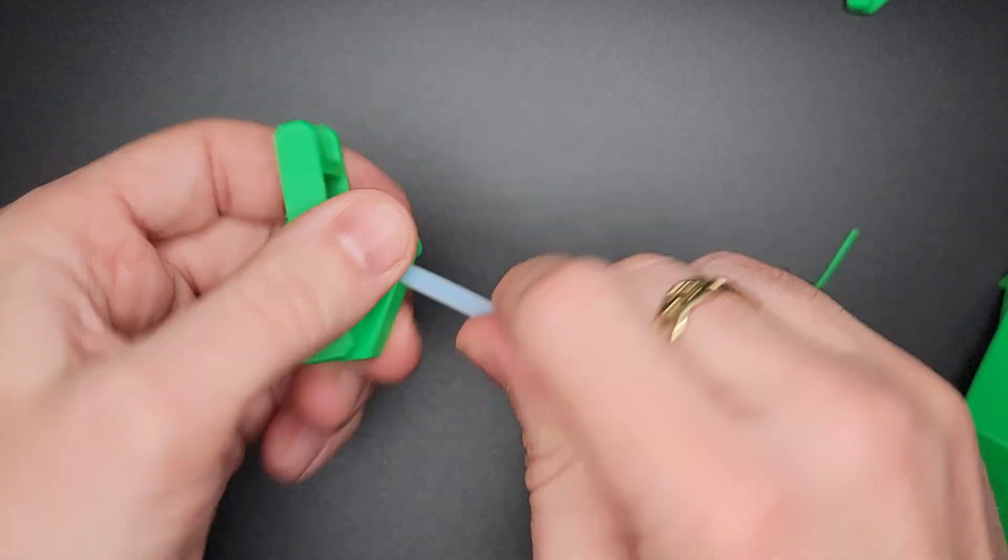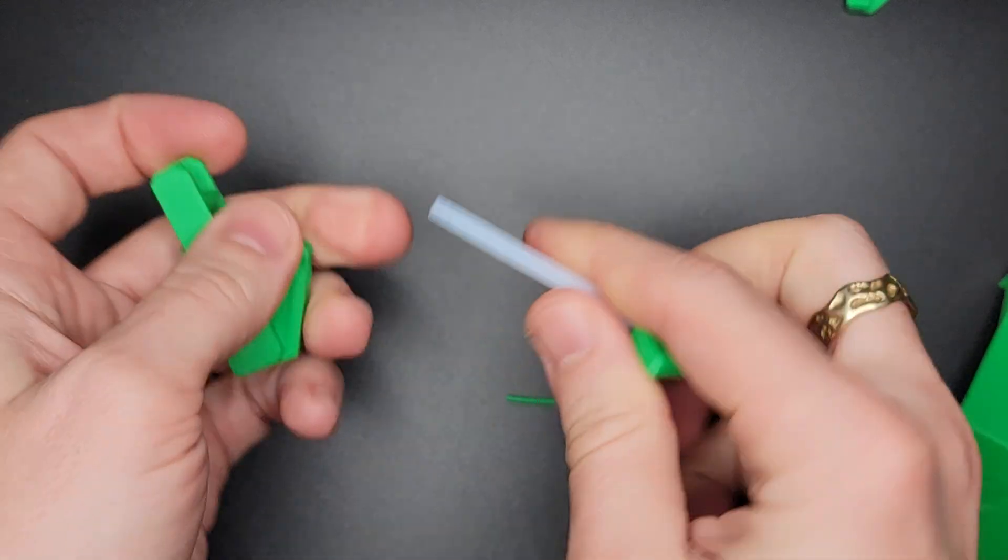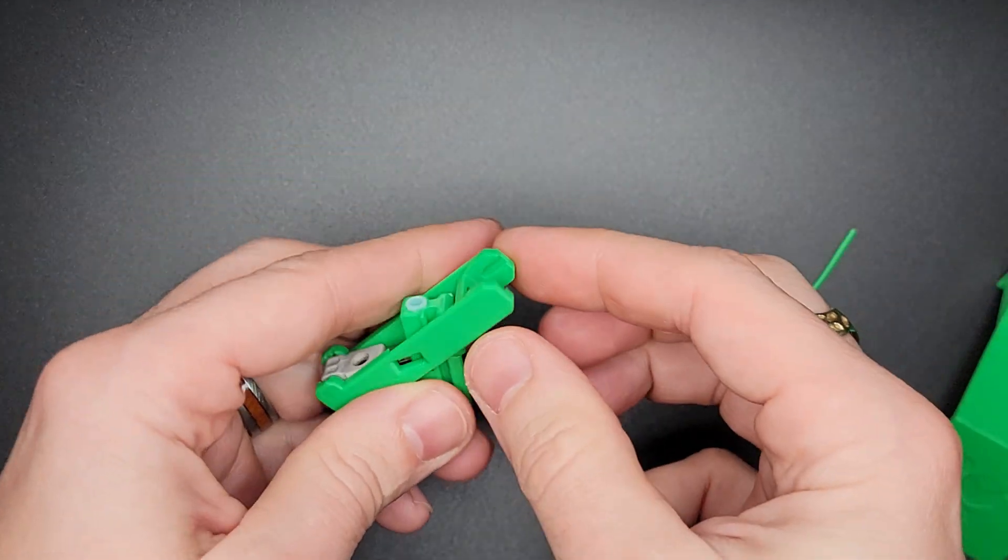To remove the Teflon tube, just unscrew it. You can do that for that section too.